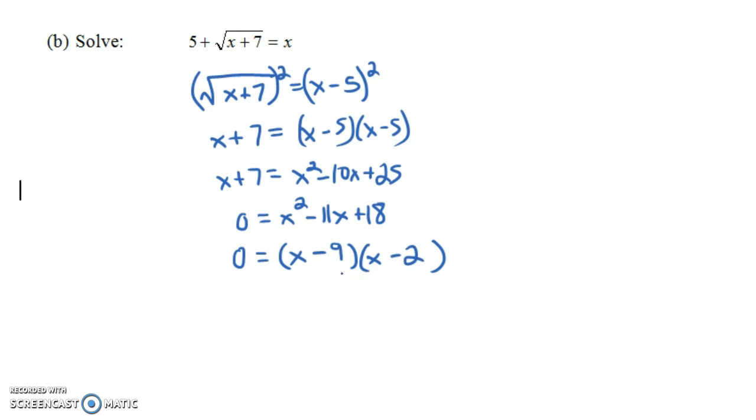If you FOIL that out, you get X squared. You have a minus 9X and another minus 2X. That's minus 11X. And minus 9 times minus 2 is plus 18. So notice our two solutions are X equals 9 or X equals 2. Now the thing is that we have to be a little careful. Let's check our solutions.